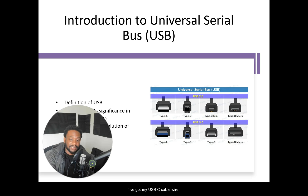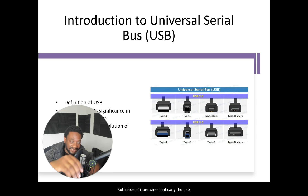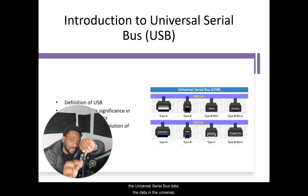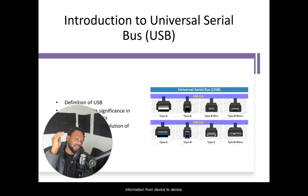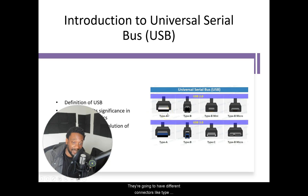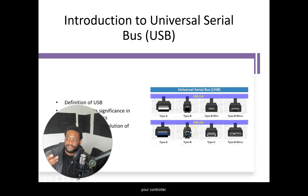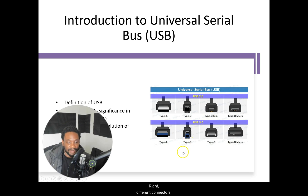I've got my USB-C cable and wire here. That has a USB-C connector, but inside of it are wires that carry the USB — the Universal Serial Bus data. It's the bundle of wires, really, that carry the information. Here we have various types of connectors for when you want to carry that information from device to device. Each device or computer is going to have different connectors like Type-A connector, Type-B connector, Type-B mini connector, like for your controller. They're different connectors. But the connector is different from the protocol.